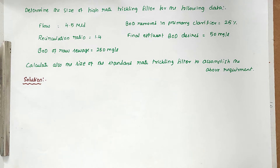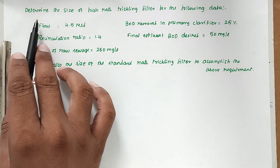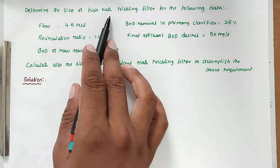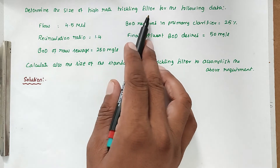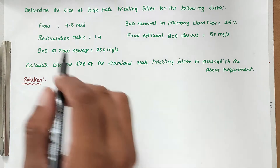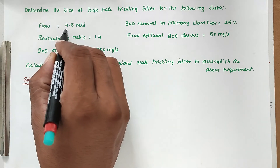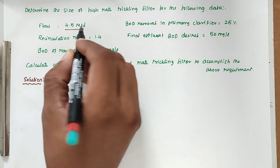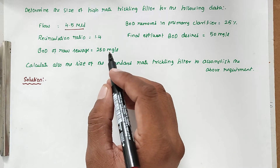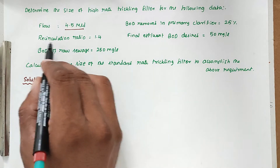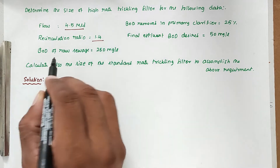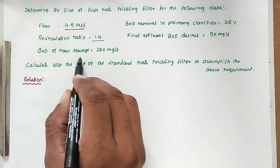Hello friends, welcome to Civil Engineering Exam. Today we're going to see a problem related to wastewater engineering in the topic of design of high rate trickling filter. The problem is to determine the size of a high rate trickling filter for the following data: the flow is 4.5 million liters per day, and the recirculation ratio is 1.4.